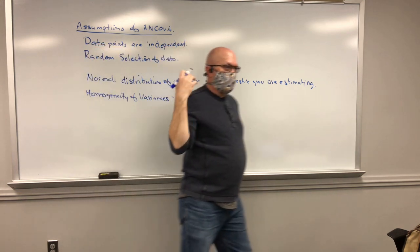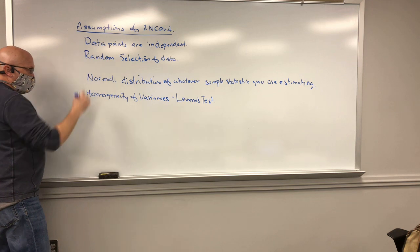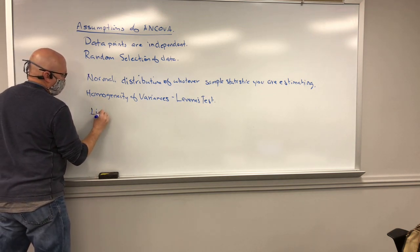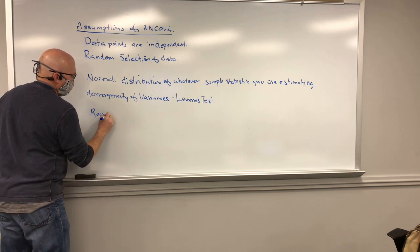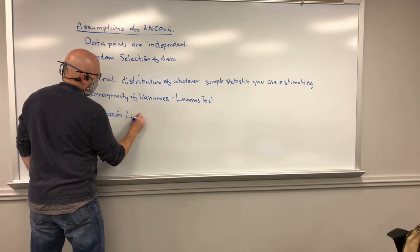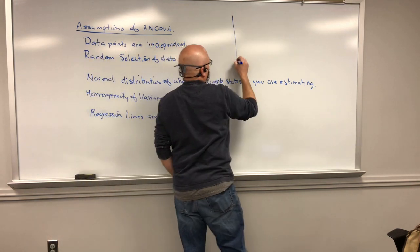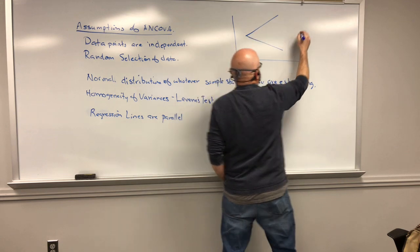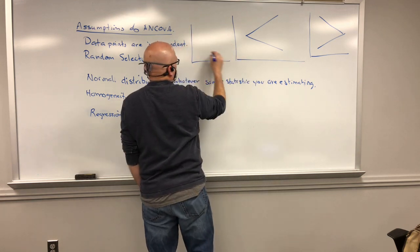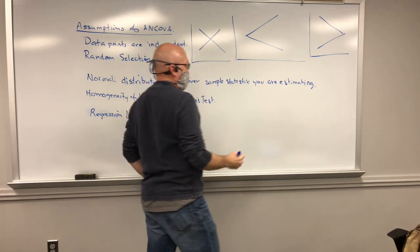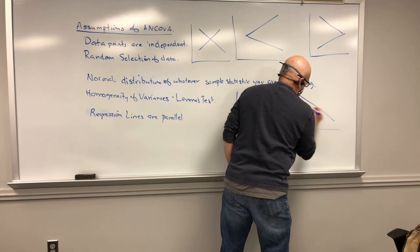For an analysis of covariance, all these things have to be true, but there are a couple of additional assumptions. One additional assumption is that your regression lines are parallel to one another — they're not crossing or diverging in opposite directions.